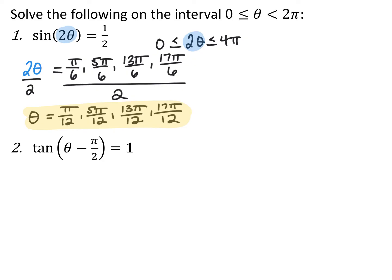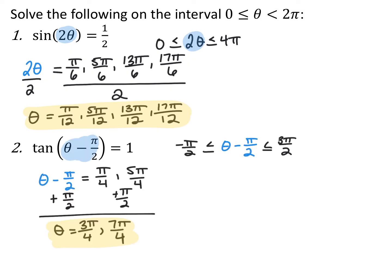Thinking about the graph: the trig function goes twice as fast as a normal sine, so there are two full sine cycles between zero and two pi, which is why there are four answers instead of the usual two. For tangent of (theta minus pi over two) equals one: adjust the interval by subtracting pi over two from each part, giving the range negative pi over two to three pi over two. Tangent equals one in that interval at pi over four and five pi over four. Those equal theta minus pi over two, so adding pi over two gives theta equal to three pi over four and seven pi over four.